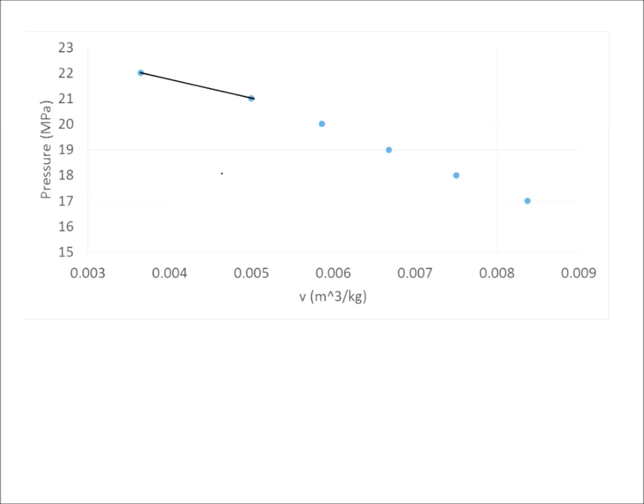And if we make that approximation, we won't be too far off from the correct value. So what we do is assume that those two points are connected by a straight line, then draw a line up from .0046, estimate where .0046 is on our graph, draw a line up until it intersects the line between the two data points, then draw a horizontal line and read off the pressure, which is somewhere between 21 and 22 megapascals. In fact, it looks like it's a little bit less than 21 and a half megapascals.